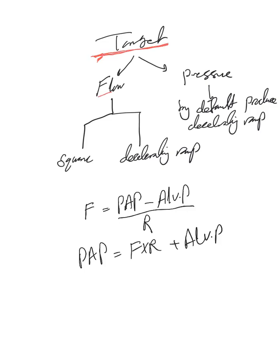We have flow target and pressure target. Flow is square or decelerated ramp. Square flow is a fixed flow rate. Deceleration ramp is fixed flow rate at a specific point in time but keeps going down.